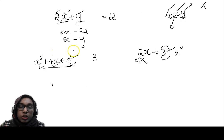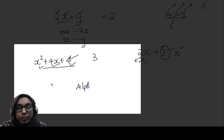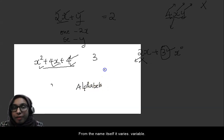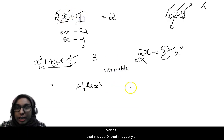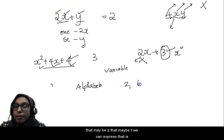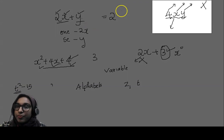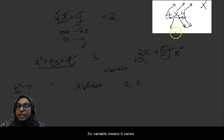Next is variable. To understand variable — it's very easy. From the name itself, it varies. Variable varies. That may be x, that may be y, that may be z, that may be t. For example, t squared minus 15 — here the variable is t. In 2x plus y, how many variables are there? x and y. Variable means it varies.